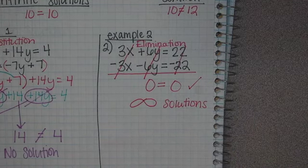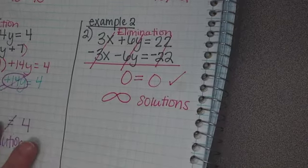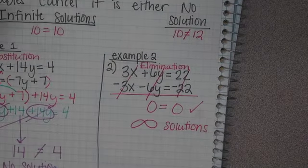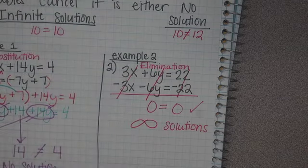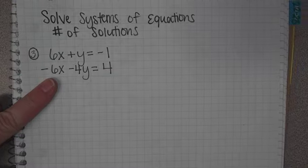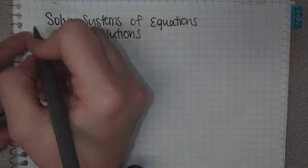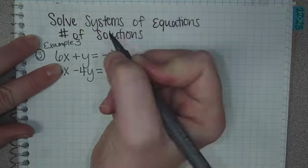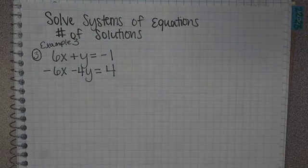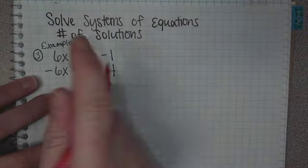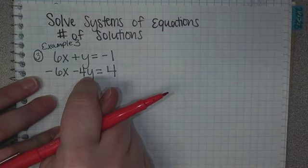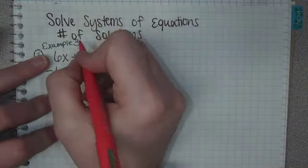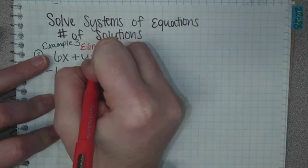Hopefully this feels pretty easy. I'm going to go ahead and write this next problem. The last problem, or last example, Example 3. Let's first figure out which way it's set up. It's x over x, y over y, equal over equal, number over number. So you're going to do elimination.